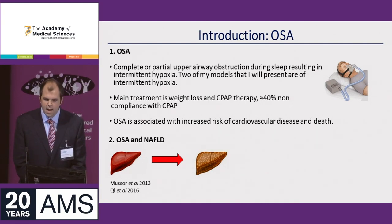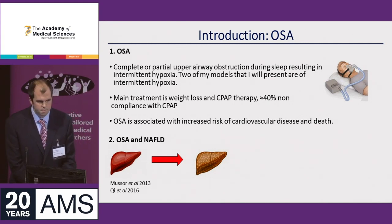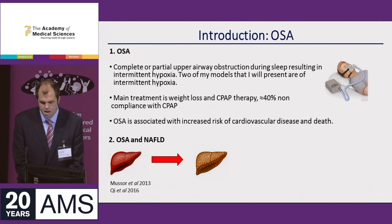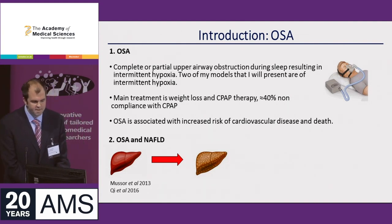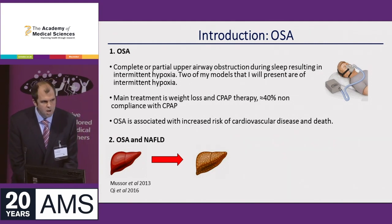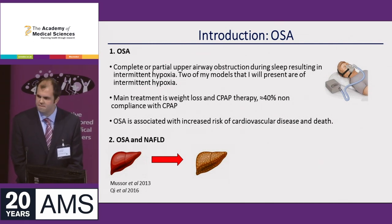The main treatment for OSA is weight loss and continuous positive airway pressure therapy, which is very poorly tolerated, as pictured here. We all know that obstructive sleep apnea is associated with cardiovascular risk and, unfortunately, death. But it's also associated with my other disease of interest — non-alcoholic fatty liver disease.